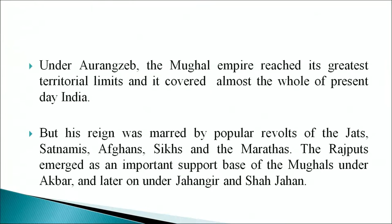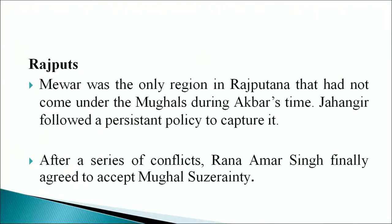Under Aurangzeb, the Mughal empire reached its greatest territorial limits, covering almost the whole of present-day India. But his reign was marred by popular revolts of the Jats, Satnamis, Afghans, Sikhs, and the Marathas. The Rajputs had emerged as an important support base of the Mughals under Akbar and later under Jahangir and Shah Jahan as well. Mewar was the only region in Rajputana that had not come under the Mughals during Akbar's time. Jahangir followed a persistent policy to capture it. After a series of conflicts, Rana Amar Singh finally agreed to accept Mughal suzerainty. During the reigns of Jahangir and Shah Jahan, the Rajputs generally continued to be friendly with the Mughals and held very high mansabs. Shah Jahan relied upon Rajput soldiers for his campaigns in the Deccan and the northwest.